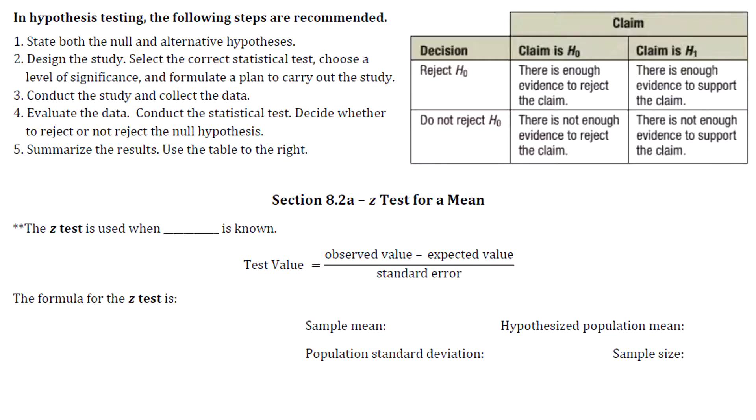The first step is to state both the null and alternative hypotheses. We practiced that. Step two is to design the study. You select the correct statistical test to use, choose your level of significance, and then formulate a plan to carry out the study.